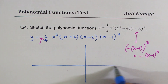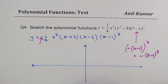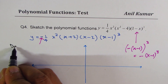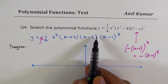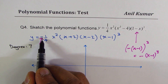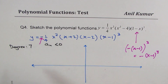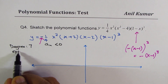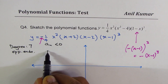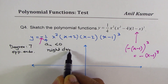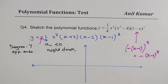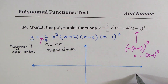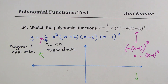Now let's sketch it. The degree is: 2 + 1 + 1 + 3 = 7. The leading coefficient a_n is less than 0. Degree 7 means opposite ends, and this negative coefficient means the right side is down. So the end behavior of the function has opposite ends going in opposite directions.